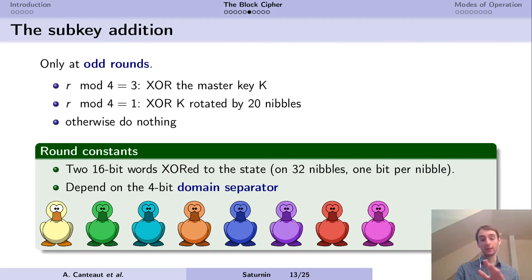The subkey addition occurs only at odd rounds. So every two rounds, we XOR a key. Either the master key K is rotated by 20 nibbles, or the master key itself. Every two rounds, we have no key addition. There are round constants, which are two 16-bit words absorbed to the state, touching 32 nibbles in total. So one bit of one constant goes to one nibble. These round constants are generated by LFSRs and depend on the domain separator, which is another parameter of 4 bits. This allows us to define independent variants of Saturnin to use for our modes of operation, which are going to be represented as ducks of different colors.